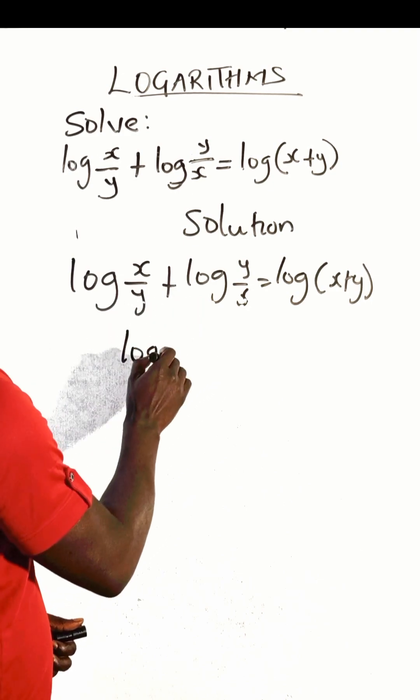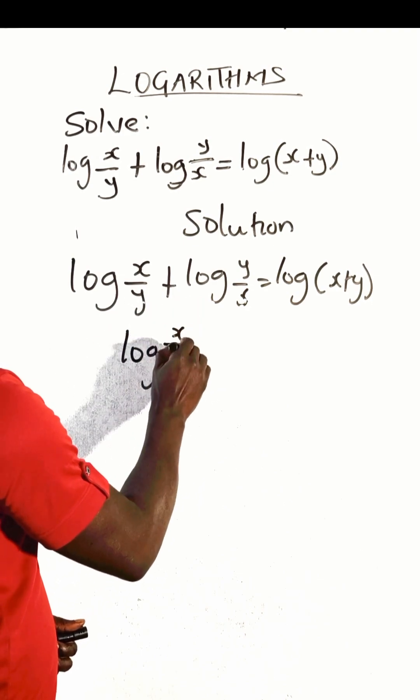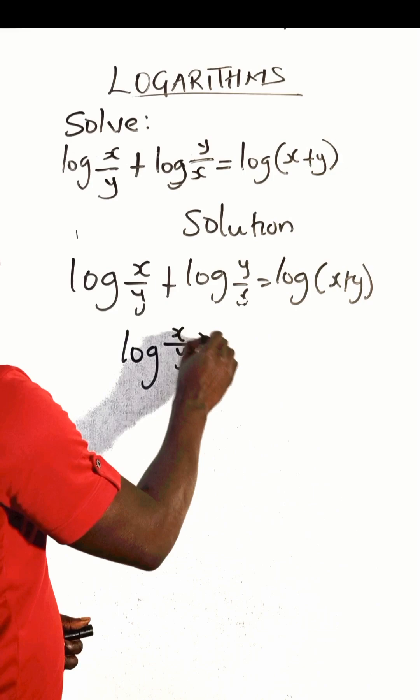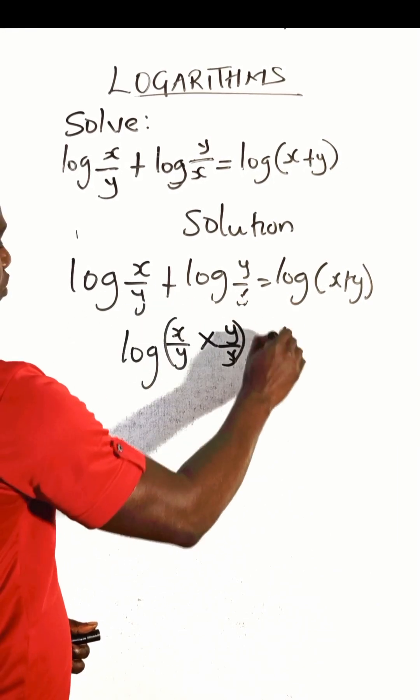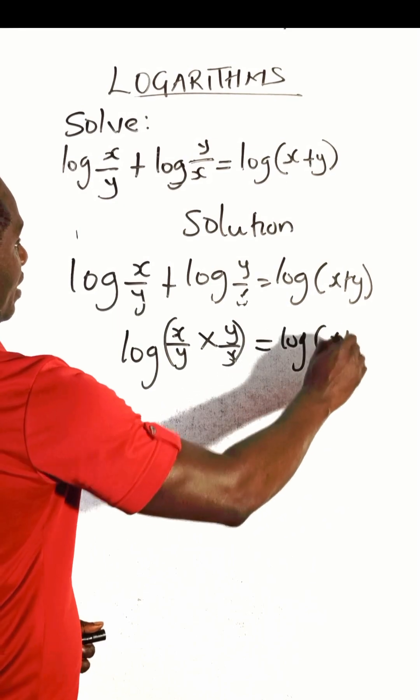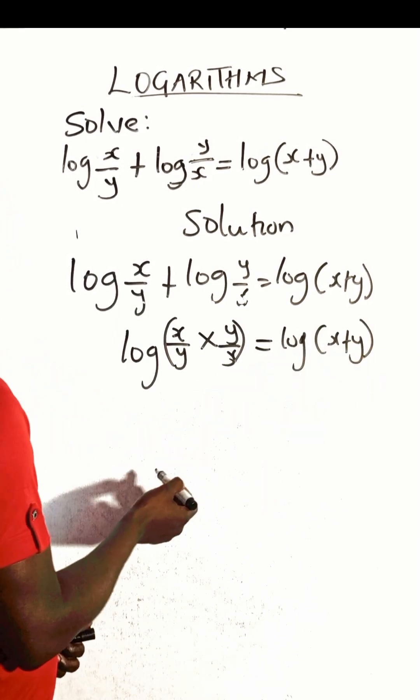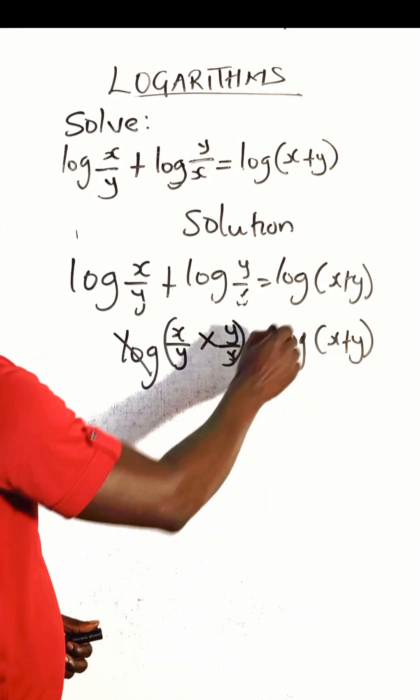You are going to multiply the logs. We multiply these numbers, and this will be equal to x plus y. If we cancel the logs...